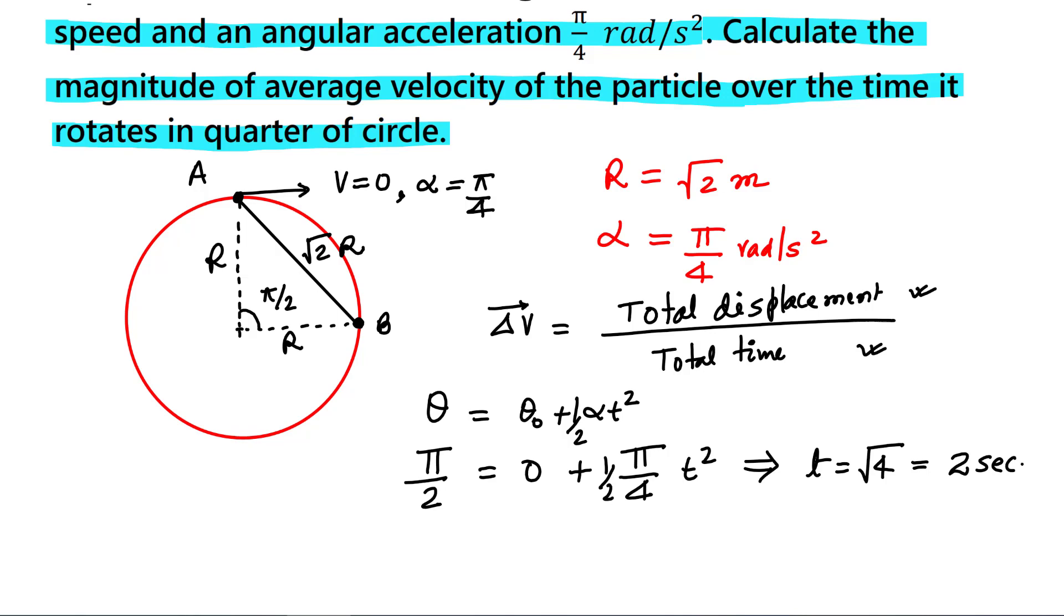So average velocity in this case will be: average velocity equals total distance, which is root 2 times r. And time is 2 second. And r value is given, that is root 2 meter. So root 2 times root 2 divided by 2, that is 1 meter per second. So this is the average velocity we will have in this problem.